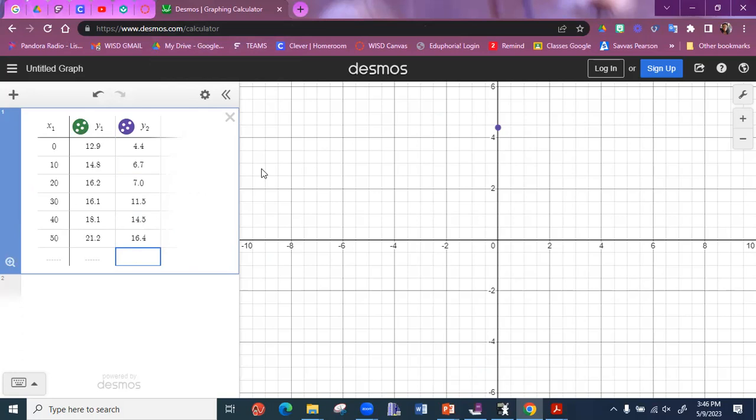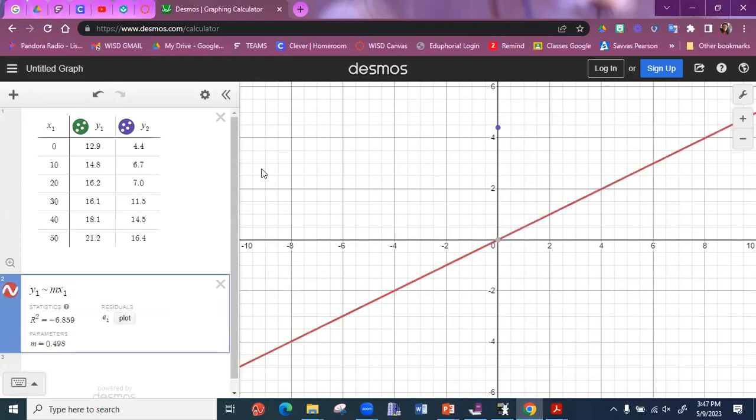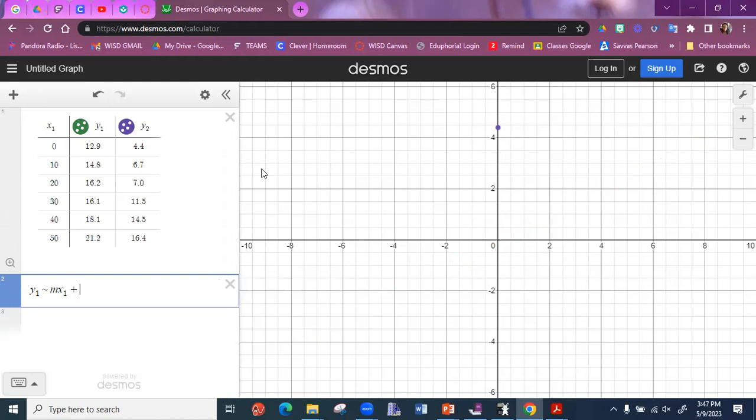So now you have your table. Now we're going to go down to box two. And this is where we're going to put in our regression model. Okay. So our regression model is going to be Y1, swiggle line, but I forget what it's called. MX1. Notice how I have to put the X1 so it knows where my X values are coming from, plus B.